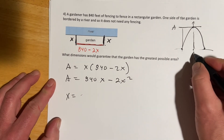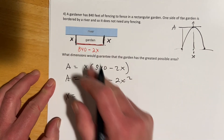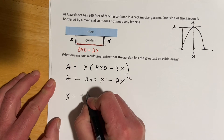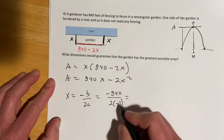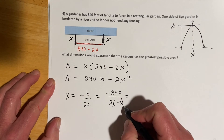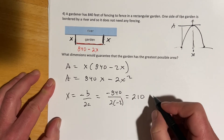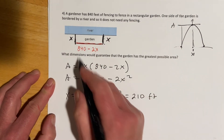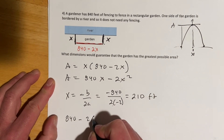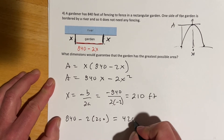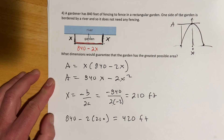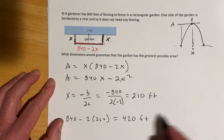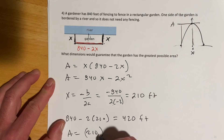Distributing: area equals 840x minus 2x squared. Area is maximized at the vertex - at zero length or zero width area is zero, and the maximum is in between. Using x equals negative b over 2a: negative 840 over 2 times negative 2 gives x equals 210 feet for the two equal sides. Then 840 minus 2 times 210 equals 420 feet for the third side. Maximum area equals 210 times 420, which is 88,200 square feet.